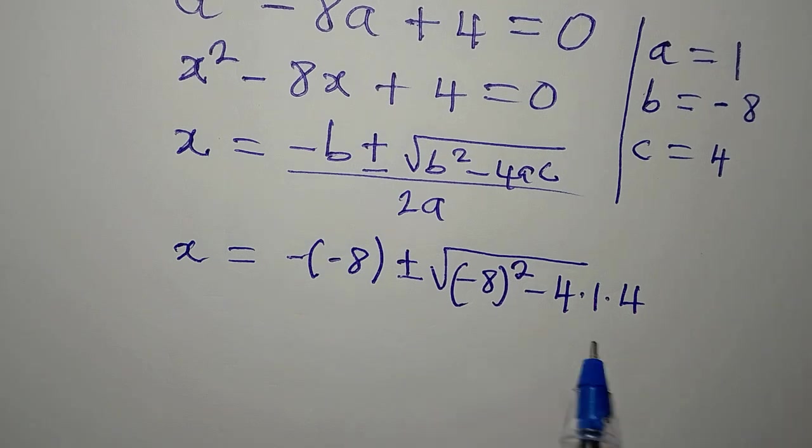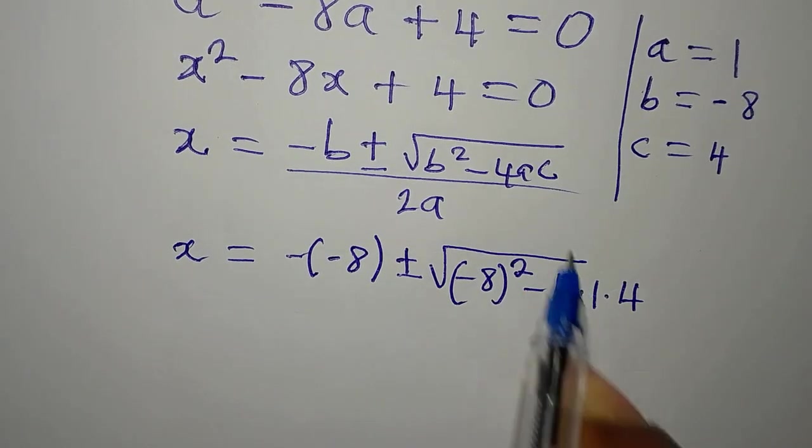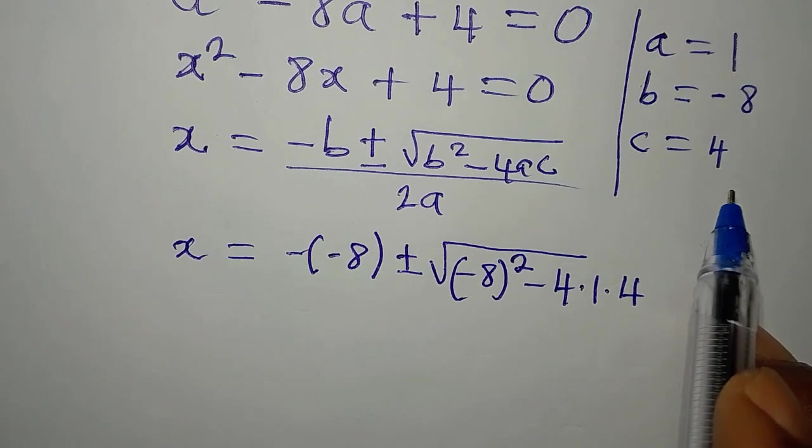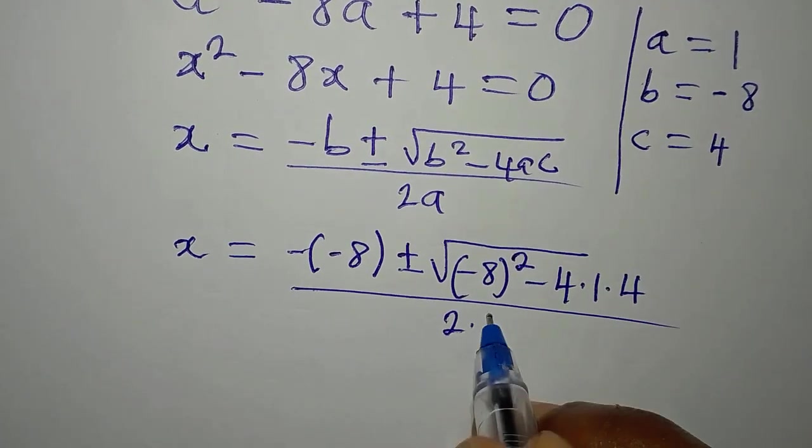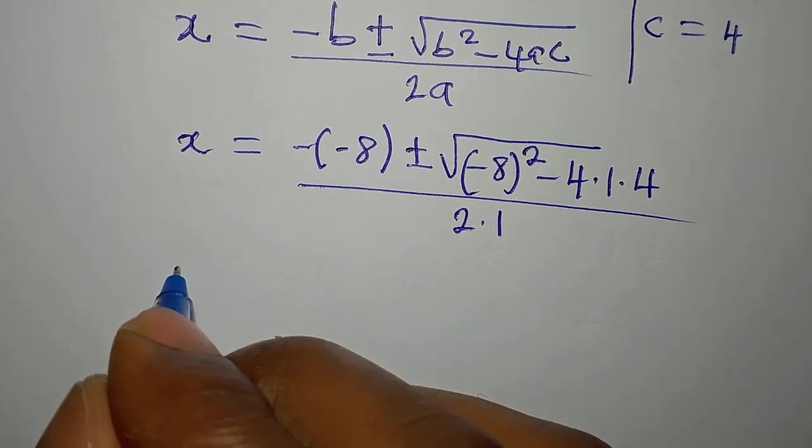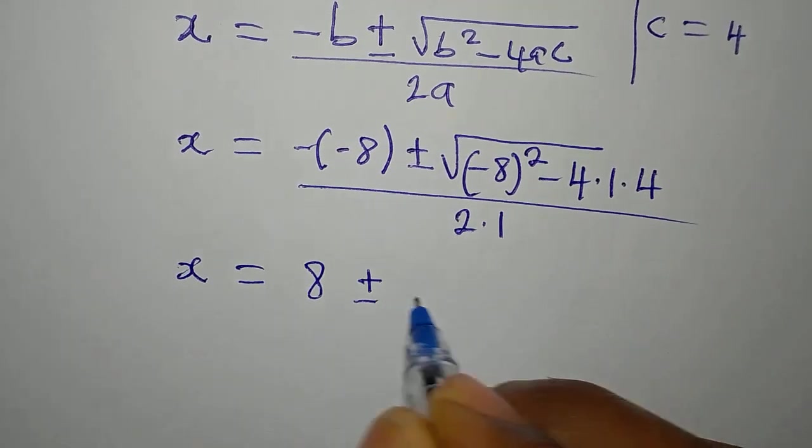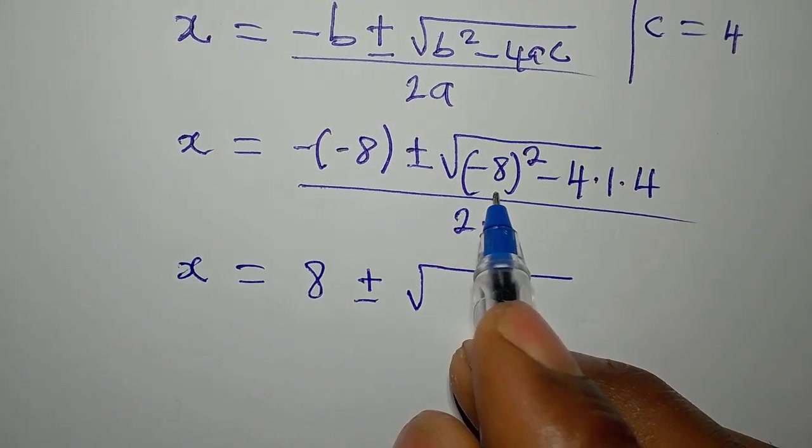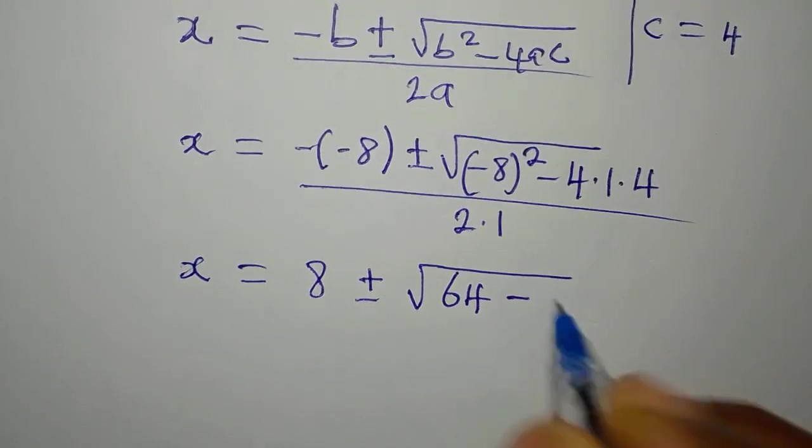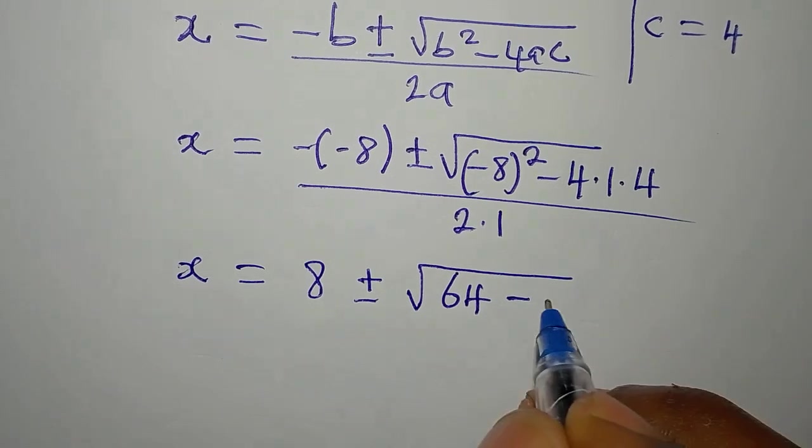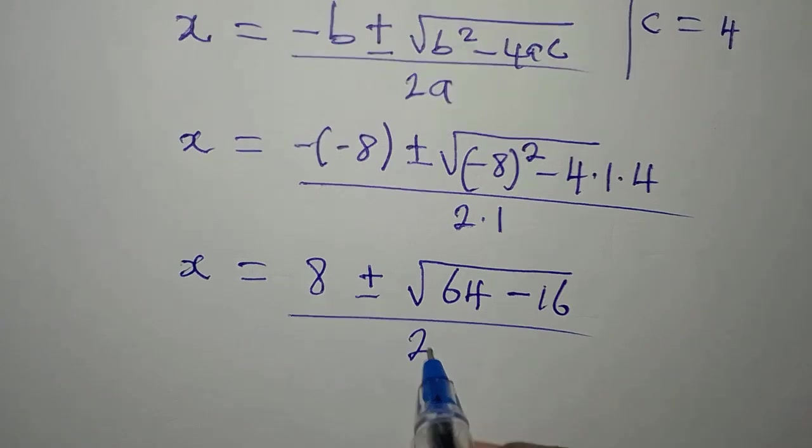How did I get that? If this 4 is in the formula, A is 1 and C is 4, just like we have over there. Then we divide this by 2 times 1. If we take a step further, our X will be equal to 8 plus or minus. Minus 8 squared will give us 64. Then minus 4 times 1 times 4 is 16. Then we divide the whole of this by 2.